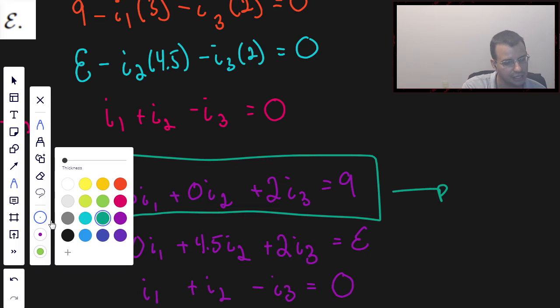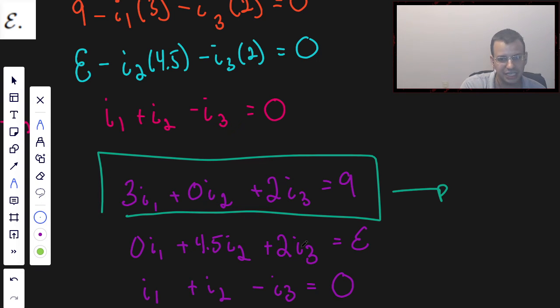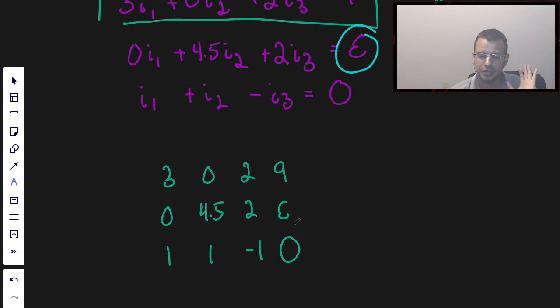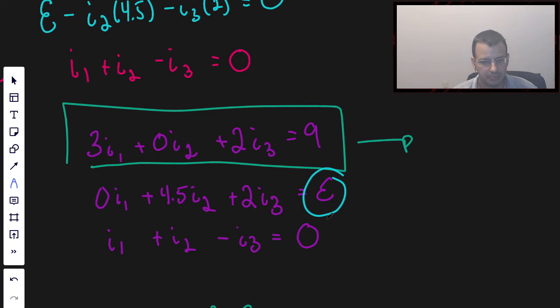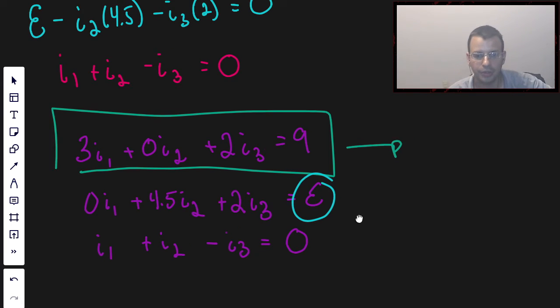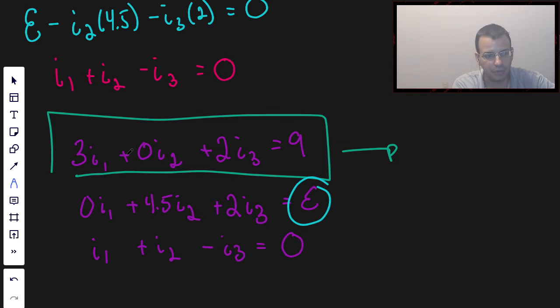I'm going to say that since they didn't give us what epsilon is, I think we could still probably solve this doing, we're basically putting it into row reduced echelon form and then it makes it easy. We're not going to do that this time because I think it would actually be more cumbersome since they gave us current. But if they gave you the battery, if epsilon was a given and I3 was not a given, then it would be easier to do it this method. But we're not going this time. So this time we're going to solve for I1.